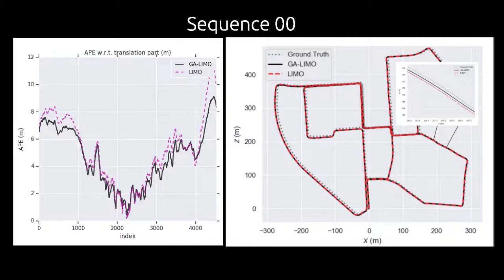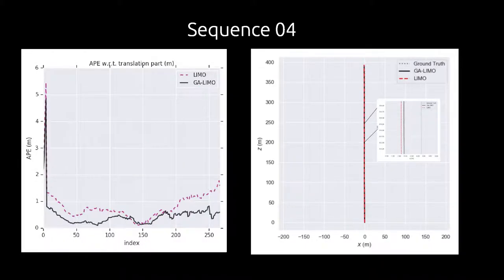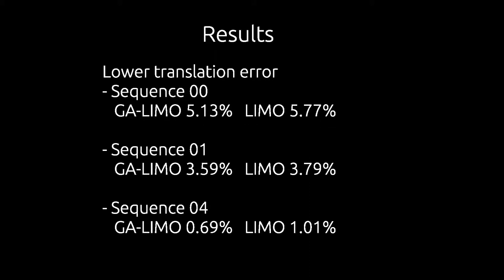The plot on the left shows translation error comparison, while on the right shows the error mapped onto the trajectory. Our experiments show that GA LEMO has lesser translation error compared to LEMO.